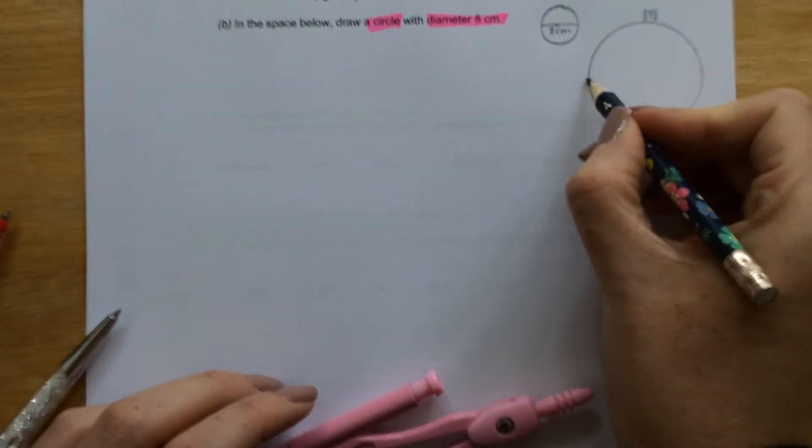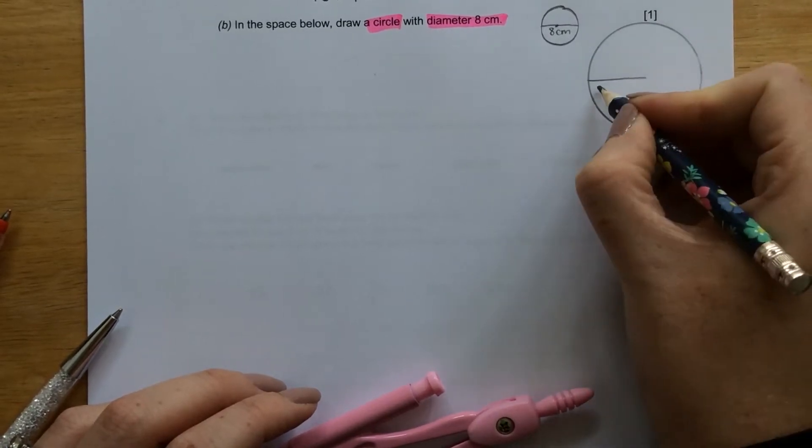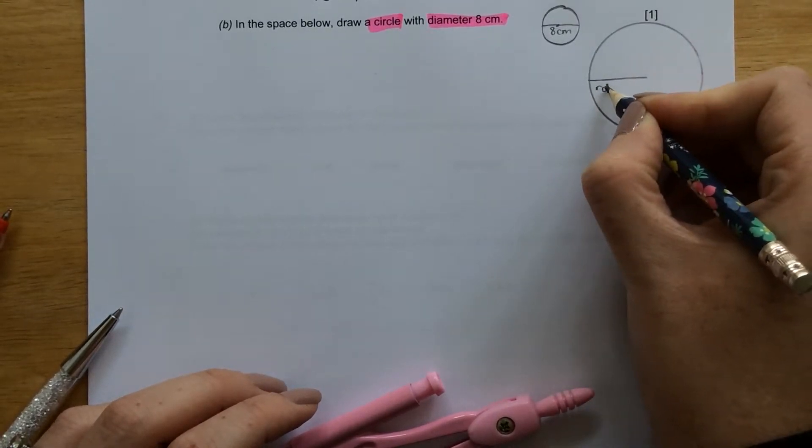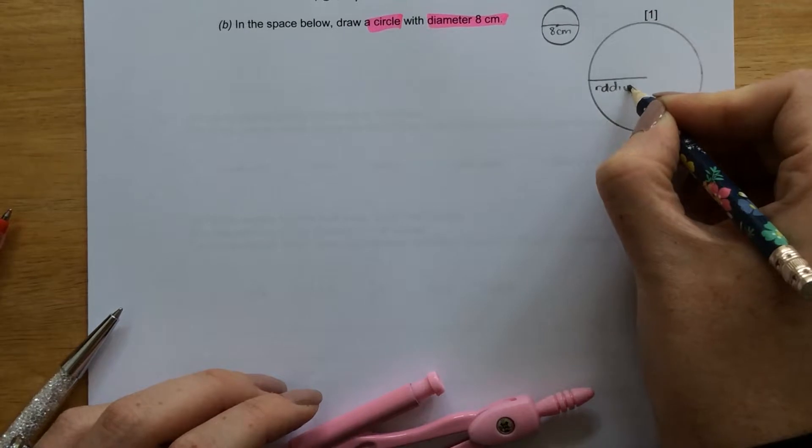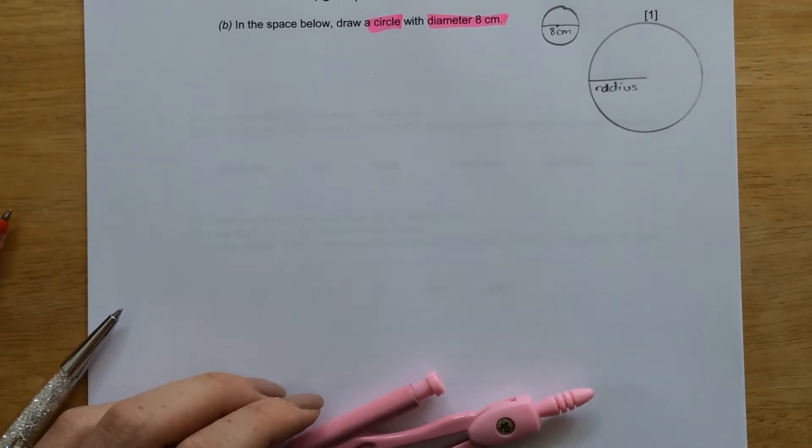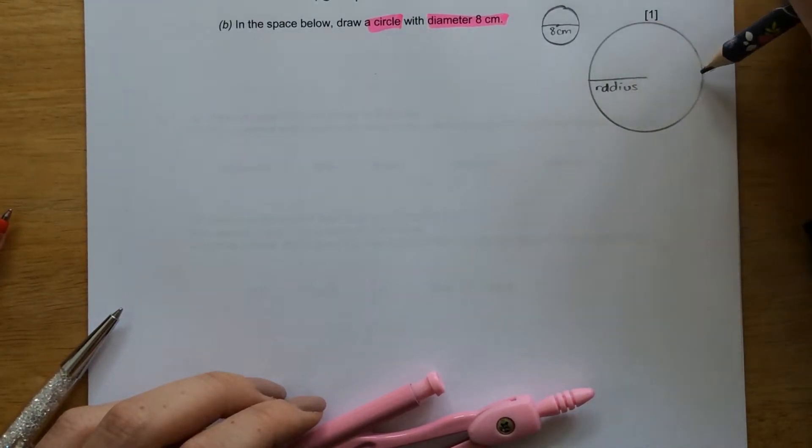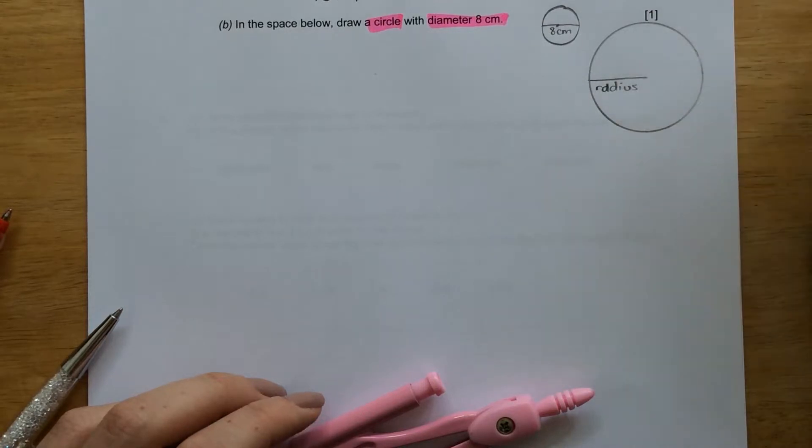This here is the radius of the circle, which is exactly, as you can see, half the diameter.